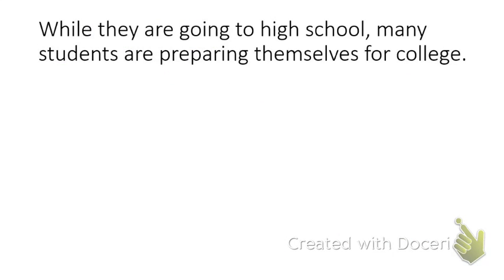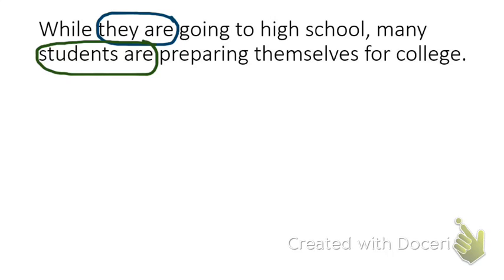Here is our third sentence: While they are going to high school, many students are preparing themselves for college. We have two subject-verb combinations: they are, and students are. Many students are preparing themselves for college is the independent clause, and while they are going to high school is the dependent clause. That means we have a complex sentence, and we also have a subordinating conjunction: while.